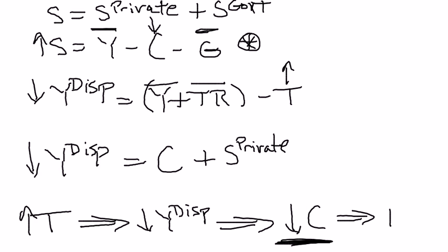This ends up increasing national savings. So, an increase in taxes causes a decrease in disposable income, that's what we showed right here. The decrease in disposable income is going to cause a decrease in consumption, which is what we showed right here. So, taxes, even if they don't explicitly appear in the equation for national savings, they do affect national savings.